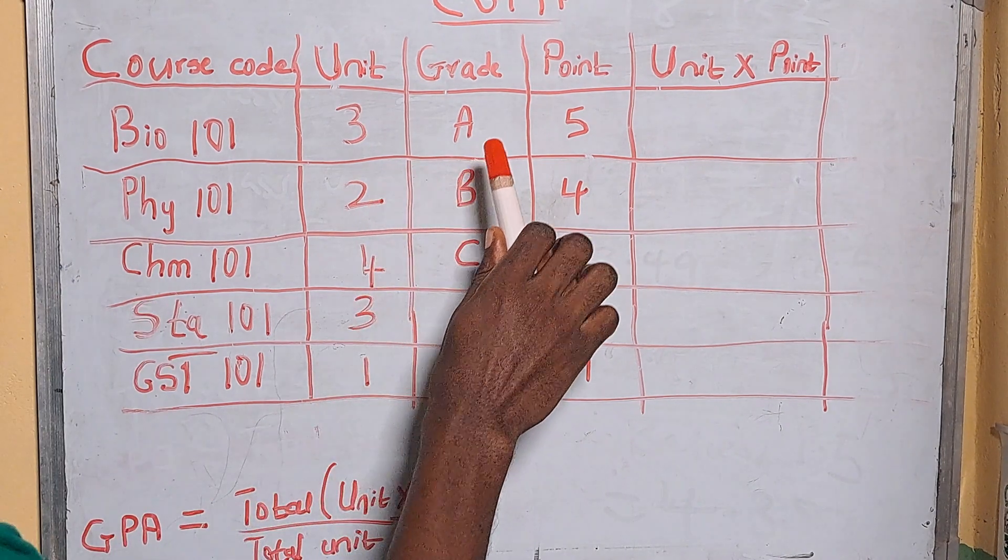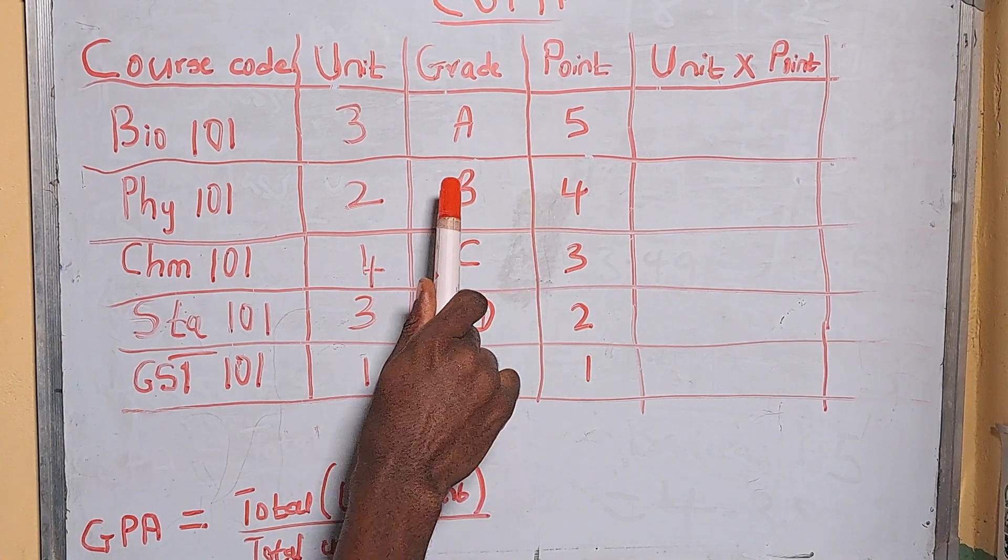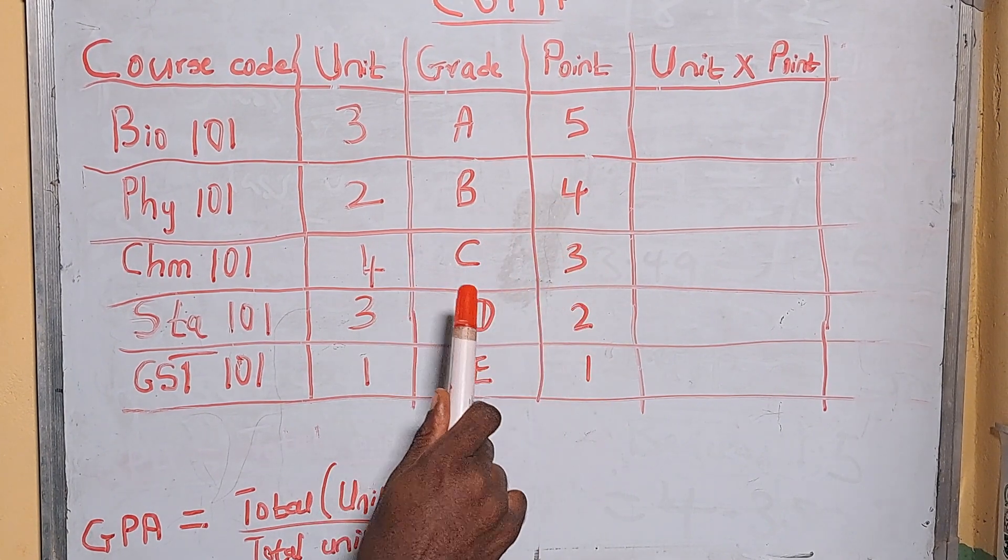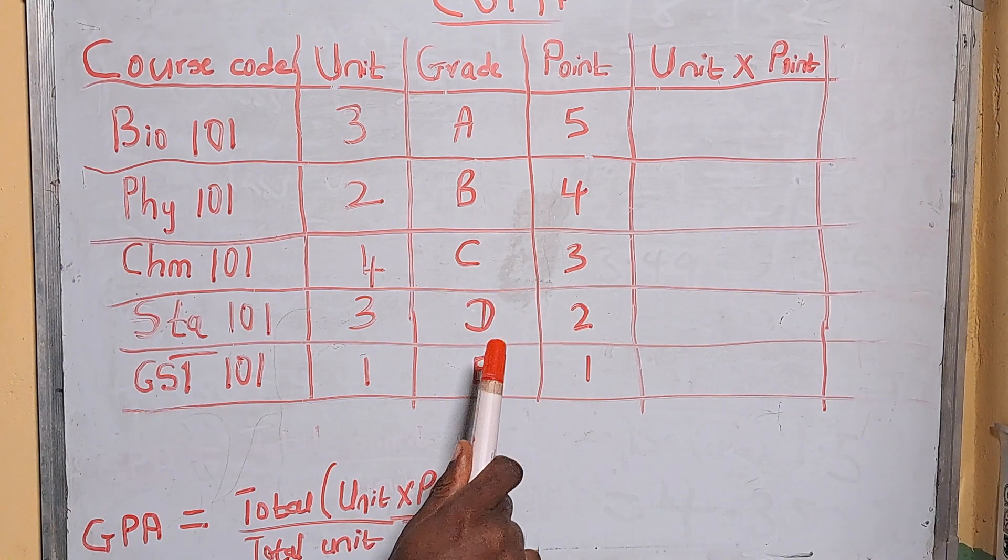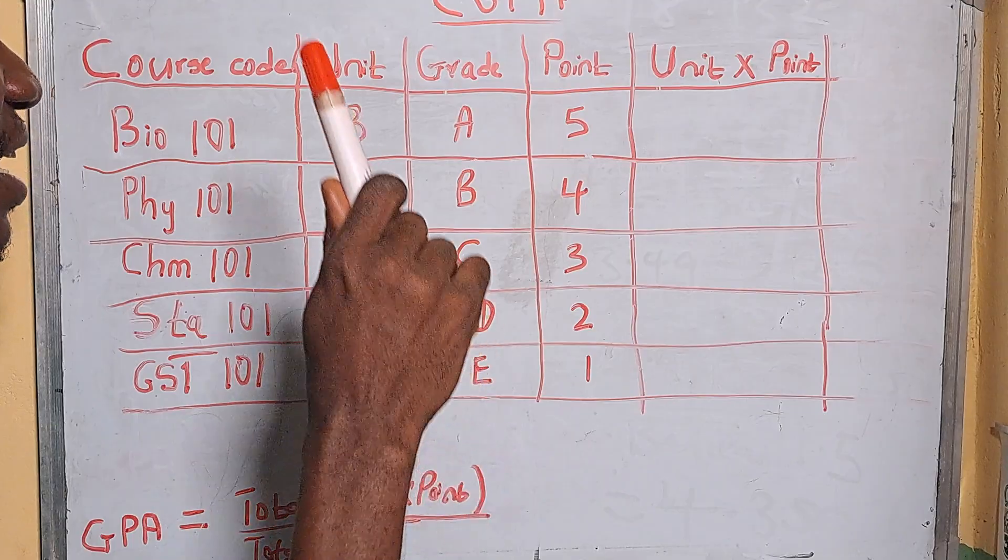And for a grade, if you get an A you get five points, if you get a B you get four points, if you get a C you get three points, and if you get a D you get two points, and an E is one point. So every grade you get has a point assigned to it.